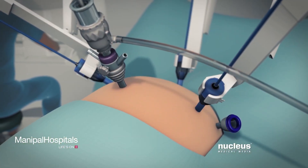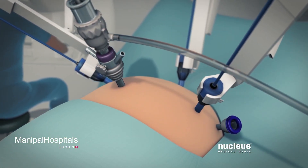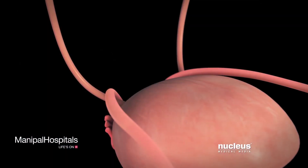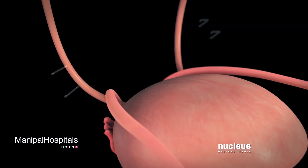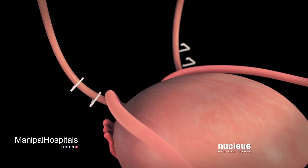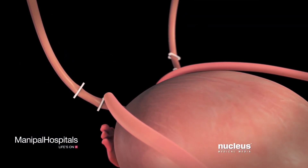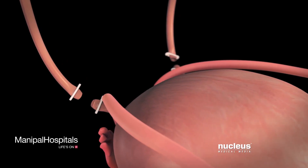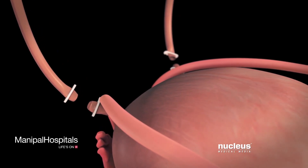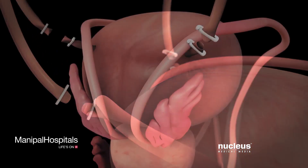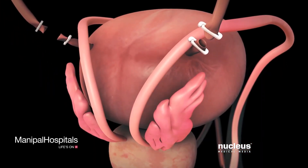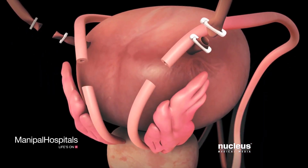With the robotic arms in position, your surgeon will cut both ureters near their connection to your bladder. Each vas deferens will also be cut.